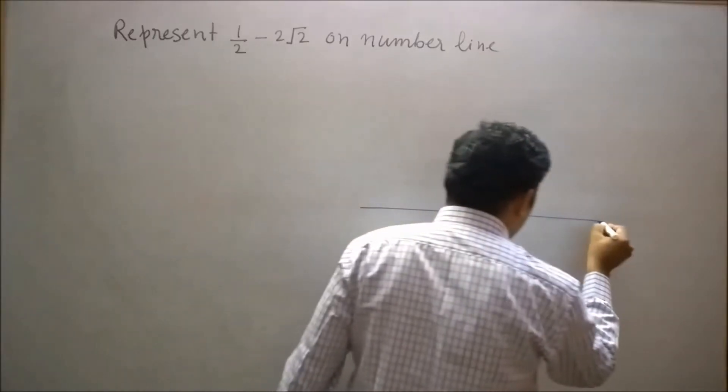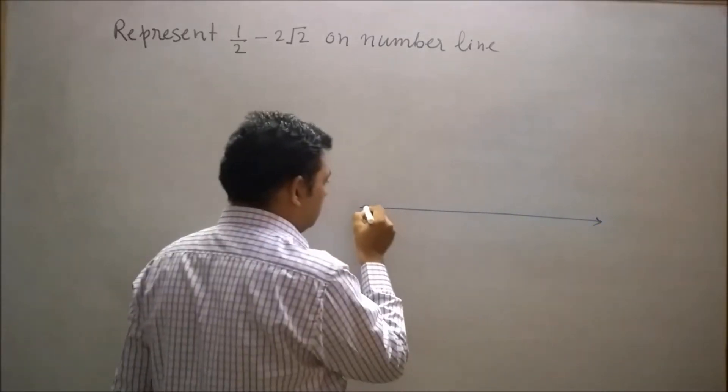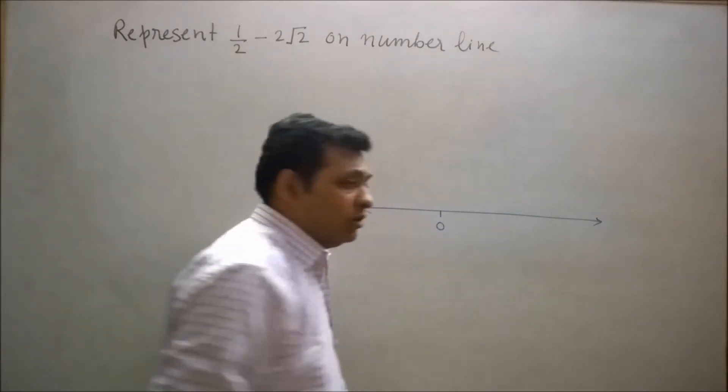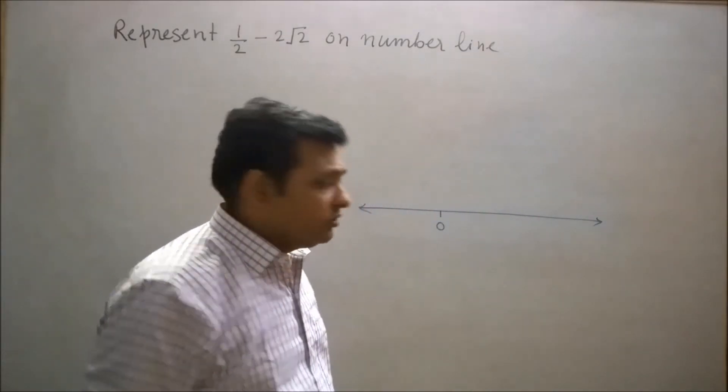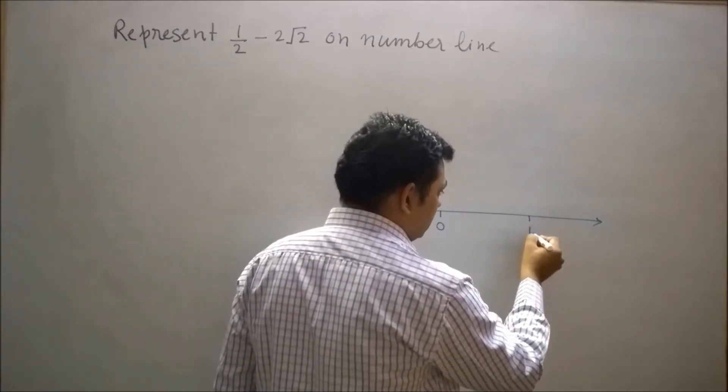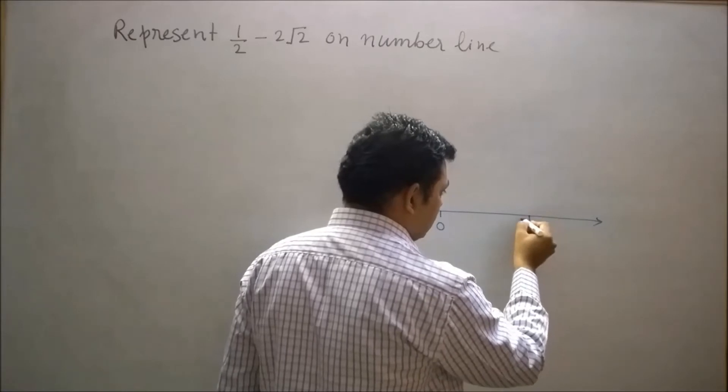First of all, I will draw a number line. Let's say this is our initial point O. Now move 1 unit distance from the right side of initial point O. Let's say this is 1 unit distance and mark this point as A.